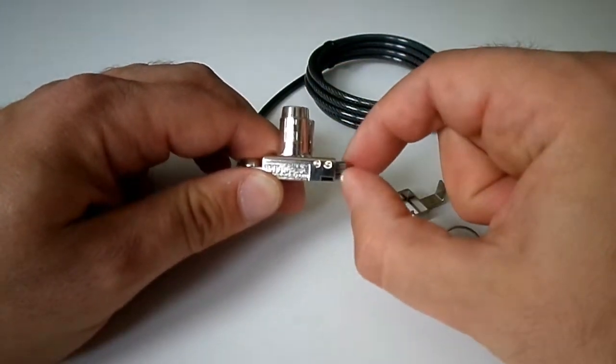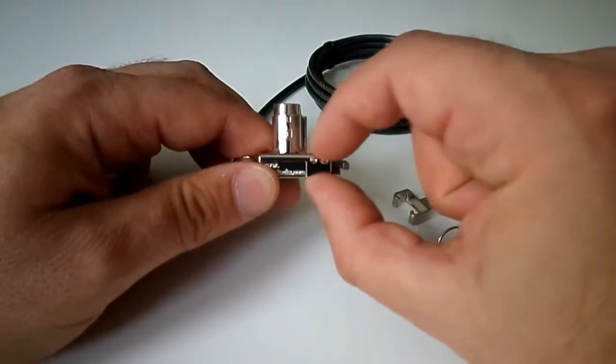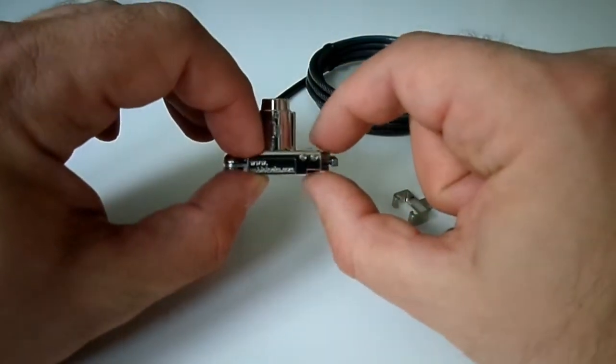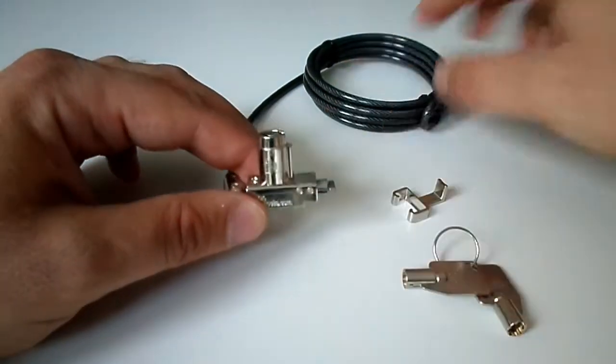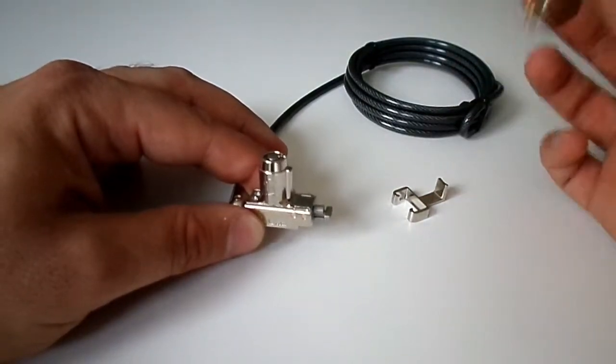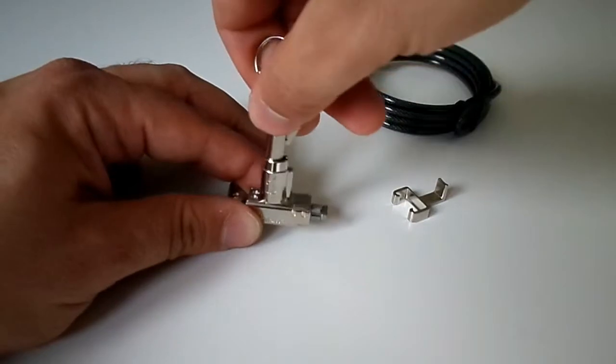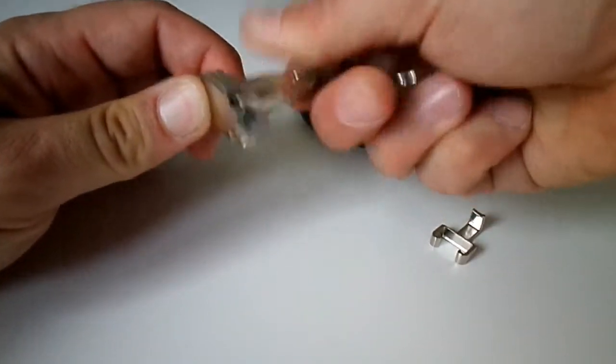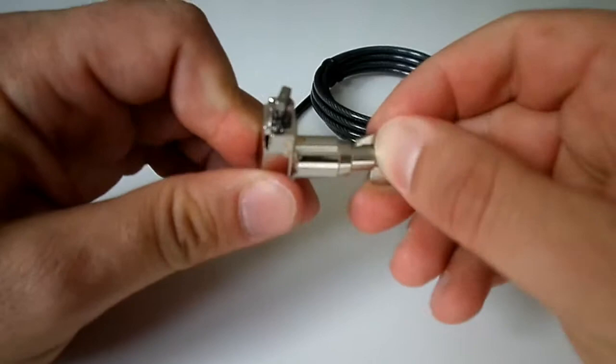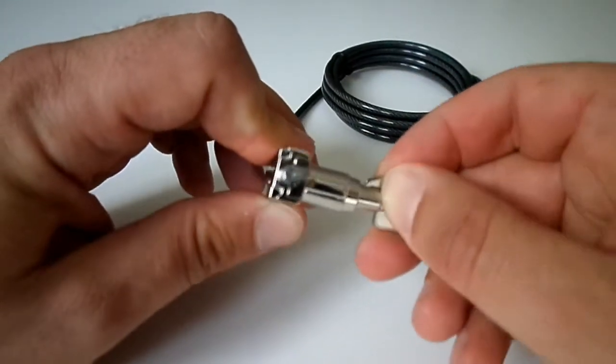So how does it work? Very simple. Key goes in, you turn 90 degrees, and there you have it. Really nice mechanism. Noble Locks are real master lock makers; they really are at the top when it comes to making locks.